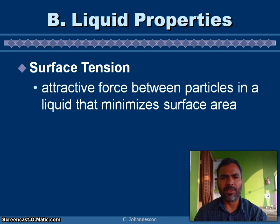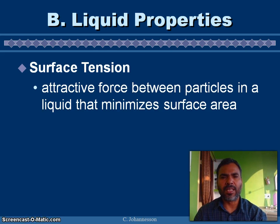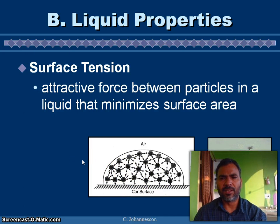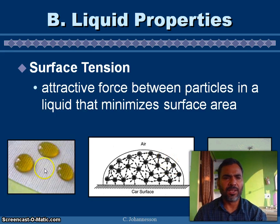Surface tension: attractive force between particles in a liquid that minimizes the surface area. This is the air, this is the car surface, and this is the droplet. Due to surface tension, you can see why the droplet forms like that.